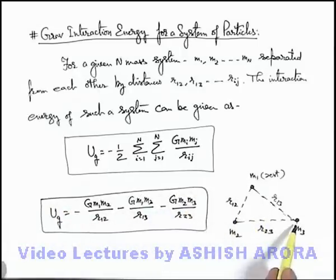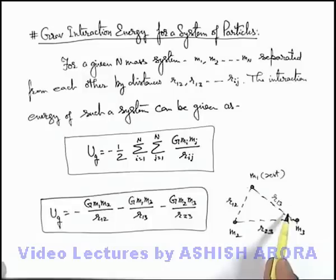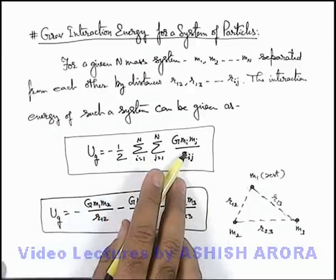So here we can say in this expression you can see what we have done. For any number of particles we can find out the possible number of pairs and corresponding to each pair of particles we find out the gravitational potential energy by using the expression of 2 particle system, and we add all these terms as energy is a scalar.